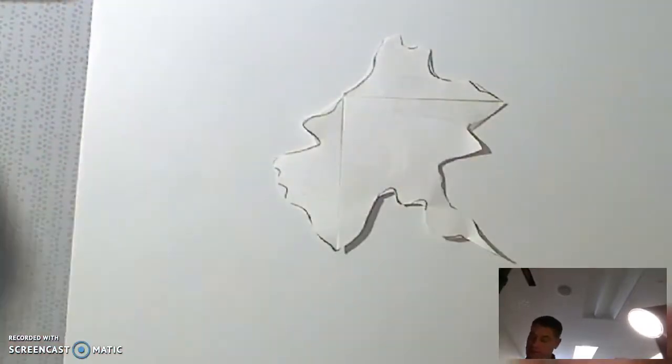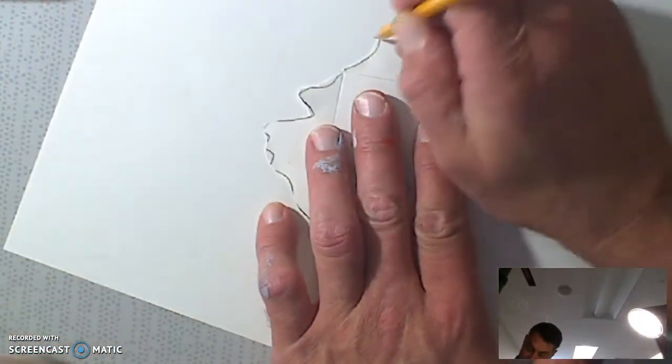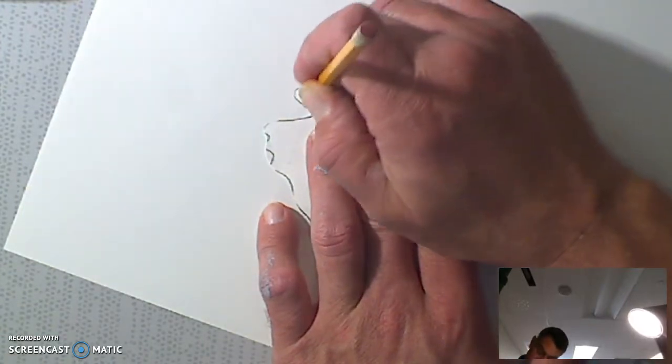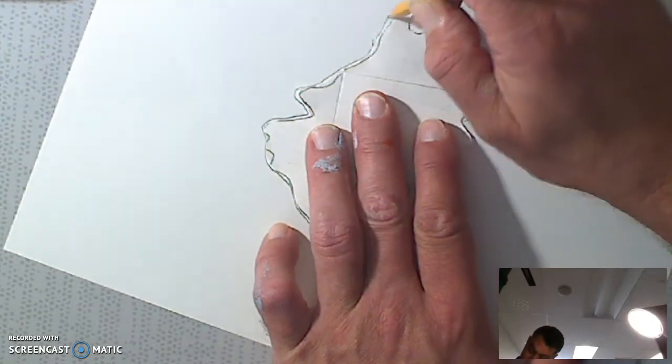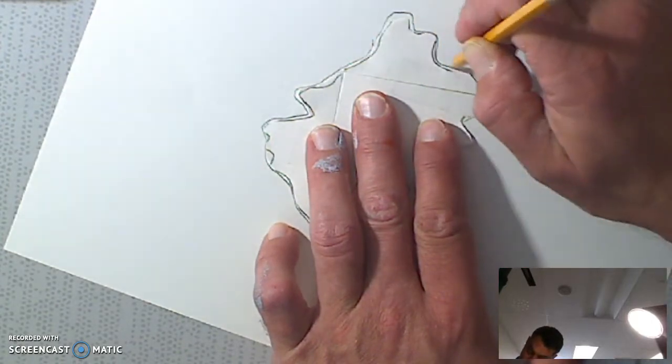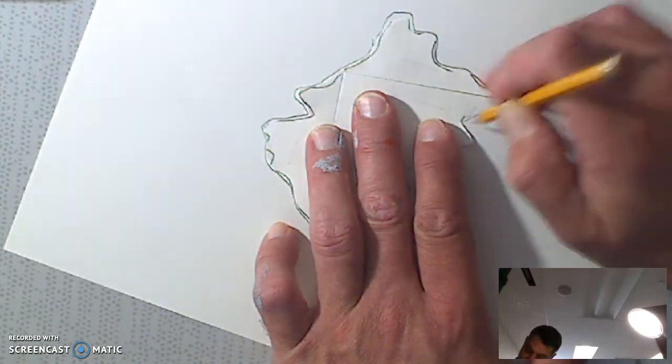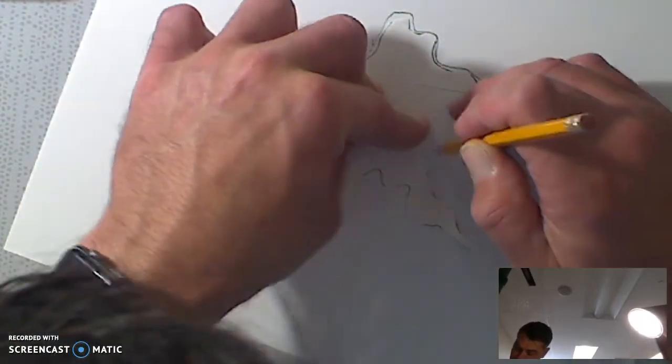Okay, so now I have my shape and I'm going to put it in the middle of my paper and trace it gently, because that paper I cut out is not super strong, so I've got to be very careful.